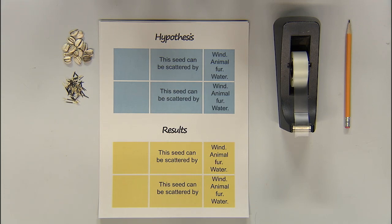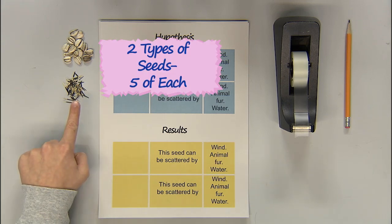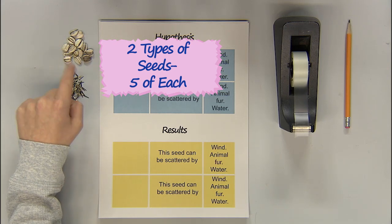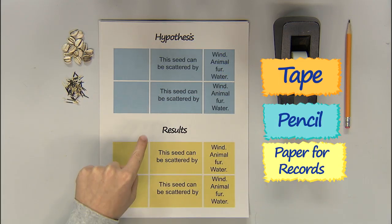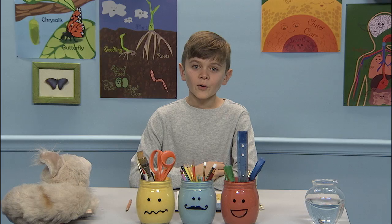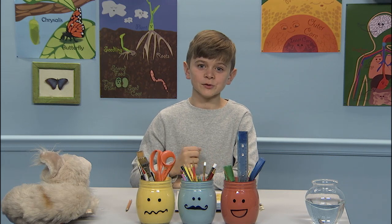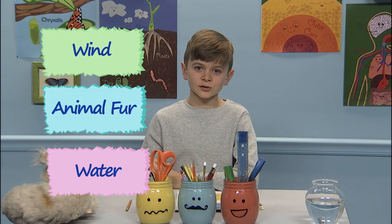For these experiments, you'll need two different types of seeds, five of each kind. I'm using marigold and sunflower seeds for my experiments. Tape, pencil, and a paper to record results. We're going to test and see if the seeds use wind, animals, or water to travel from place to place.